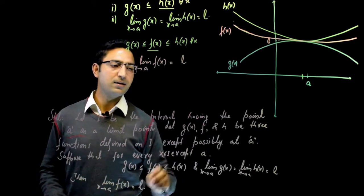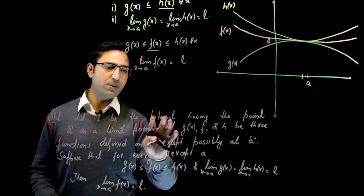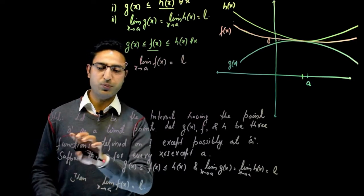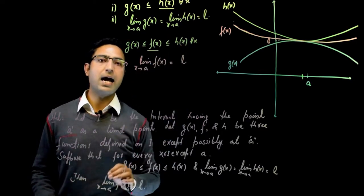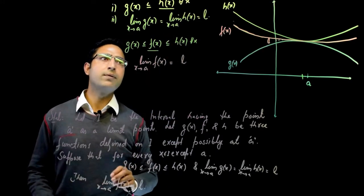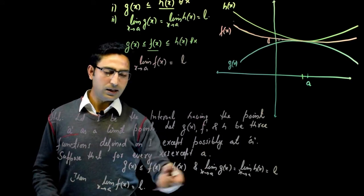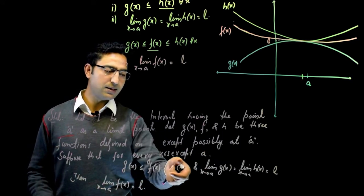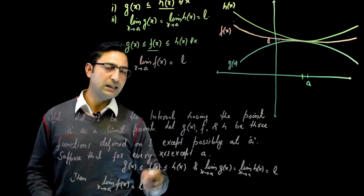Let I be an interval having the point a as the limit point. And let g, f, and h be three functions defined on every point of I except possibly at a, because we are looking at the limit of f(x), g(x) and h(x) at a.